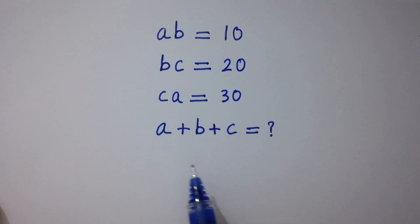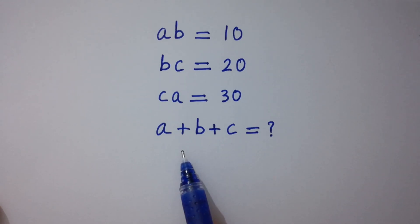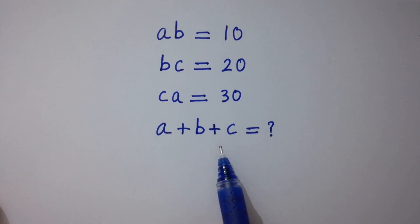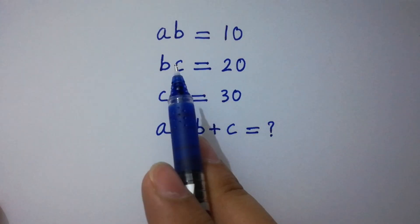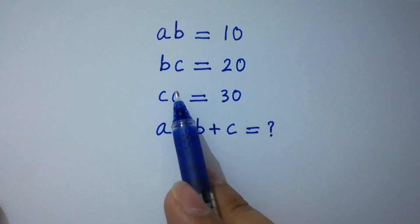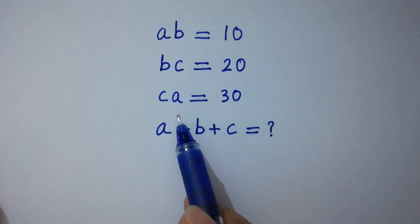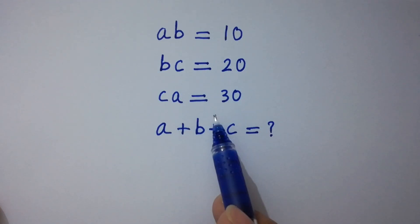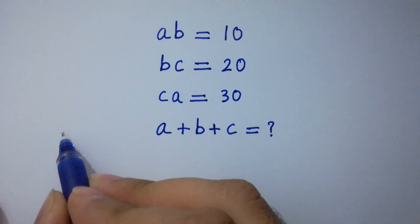Hello friends. Find the value of a plus b plus c if ab equals 10, bc equals 20, and ca equals 30. Let's have a solution.